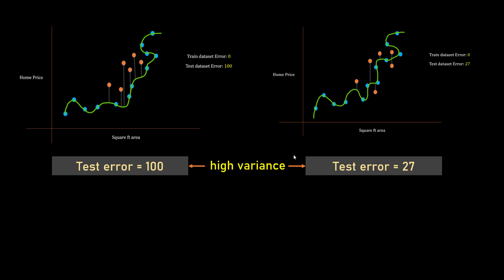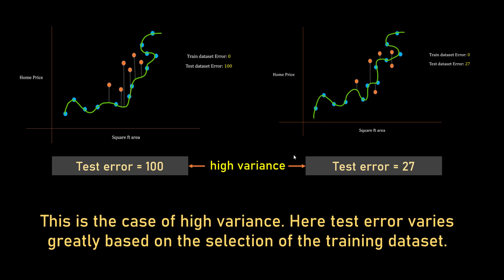Now you are selecting training samples at random, so your test error varies randomly which is not good. This is the common issue with overfit models - they tend to have high variance. High variance happens when your test error varies by great deal based on your selection of training data points. Just to remember, when you're talking about variance, you are always talking about test error.